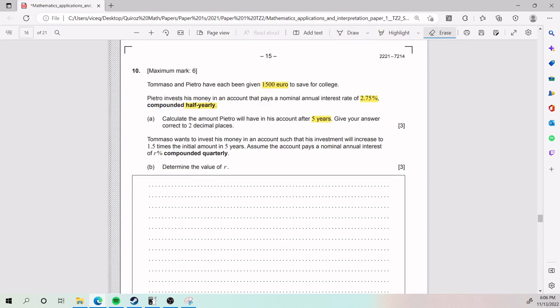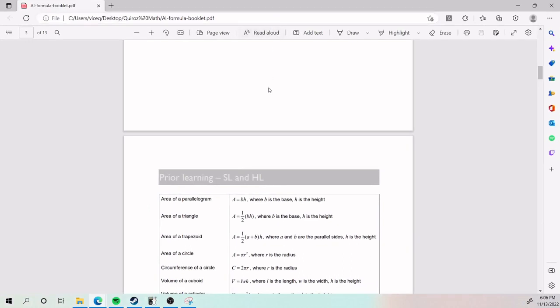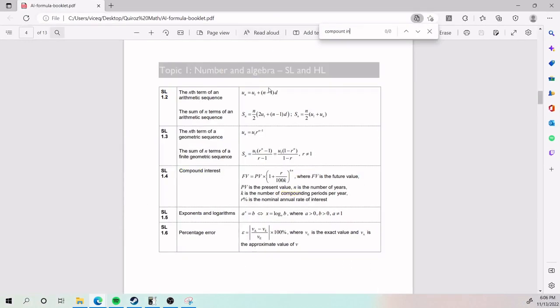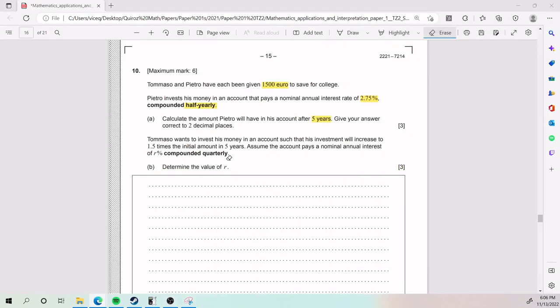Whenever you face a problem like this, you're going to pick up your formula booklet and go to compound interest, which is right there. I spelled that wrong. Compound interest. And you're going to run into this formula here. Just so you know, this is where I'm getting it from. It is in your formula booklet. You do not have to memorize it.